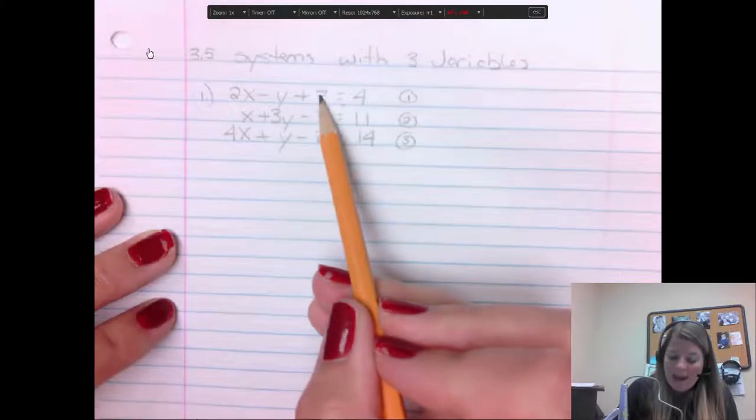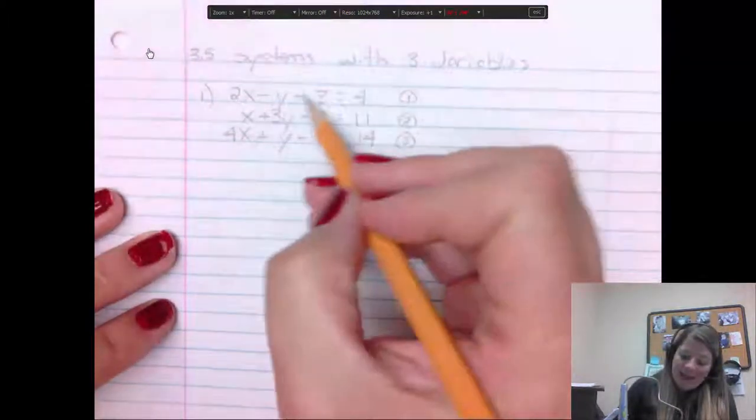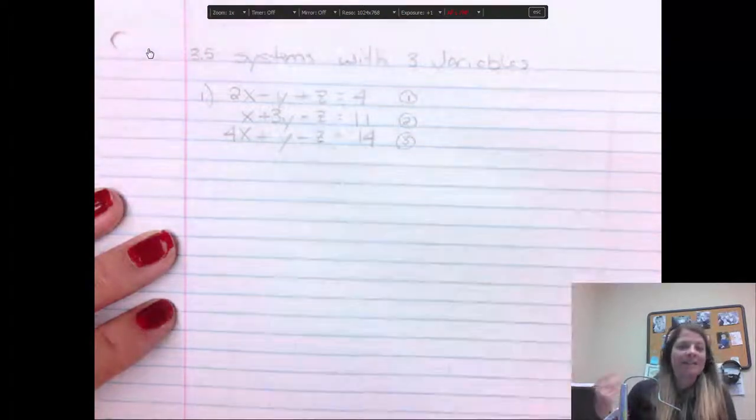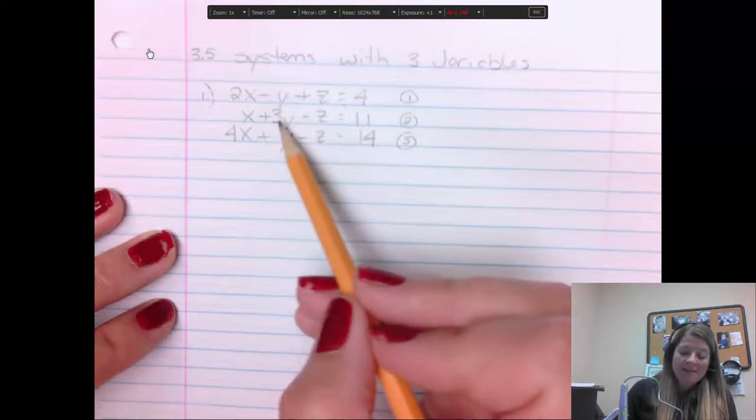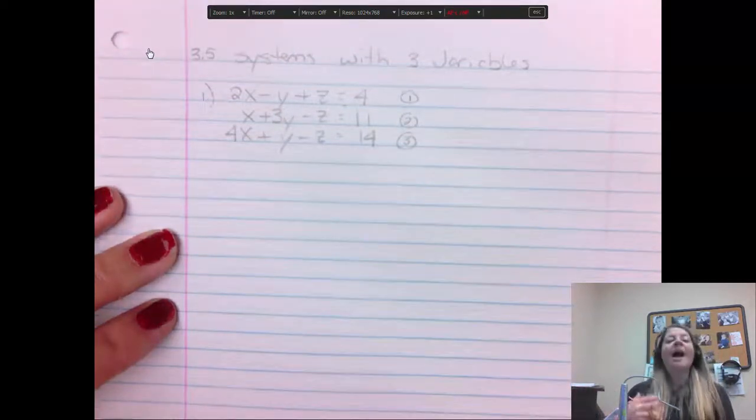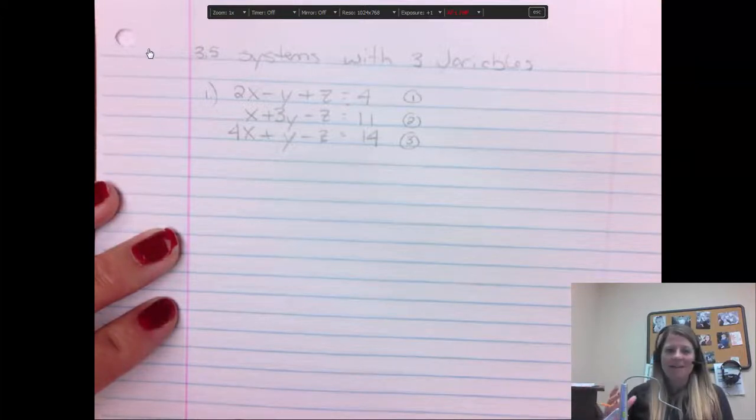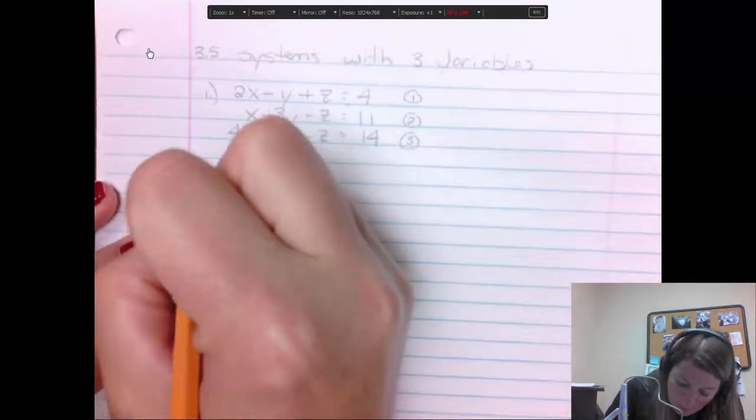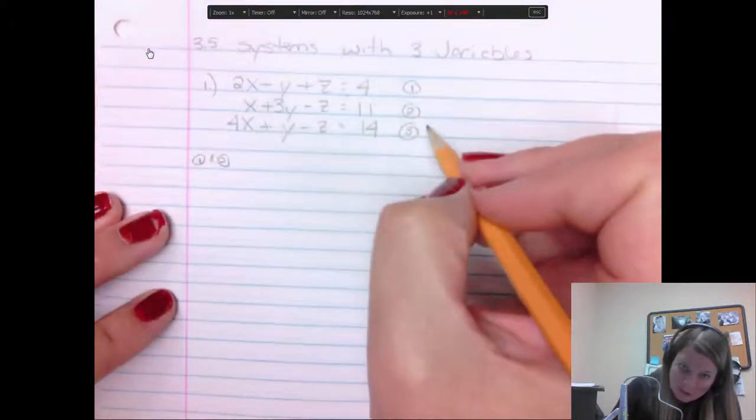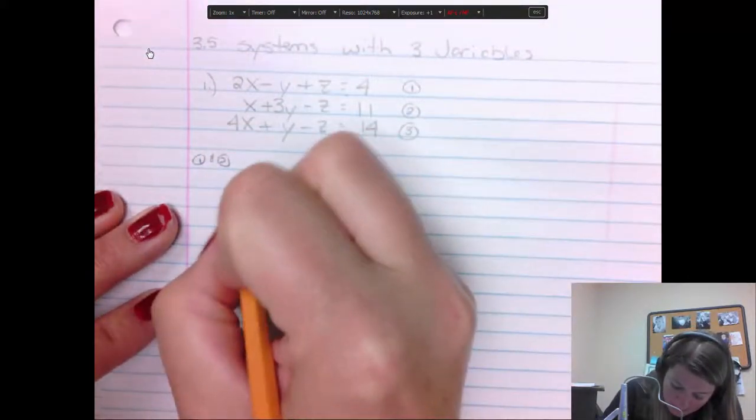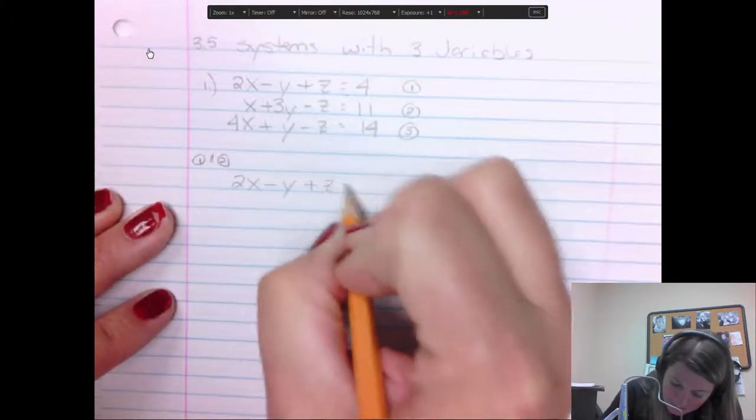So if I pair these first two, there's a plus one z and a minus one z. Well, if we did elimination, those would be gone and I'd have an equation with an x and a y. So super easy. Also, one and three would be really easy to pair together too because, again, if I add plus z and a minus z, I get a zero.